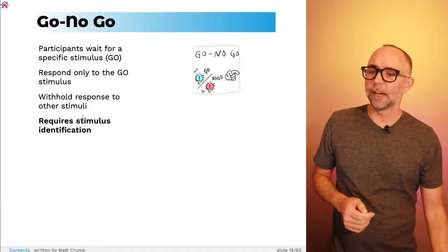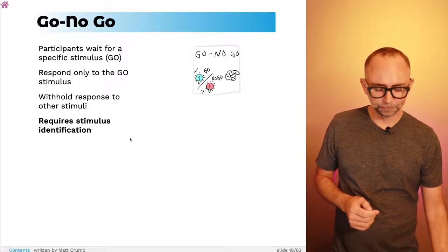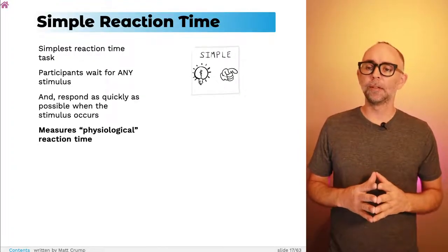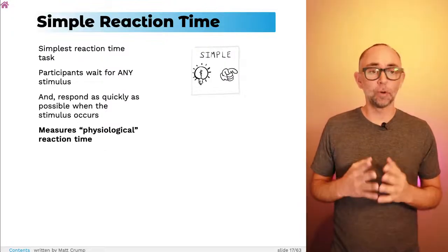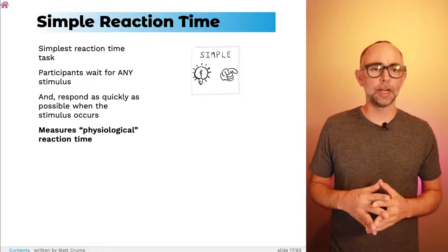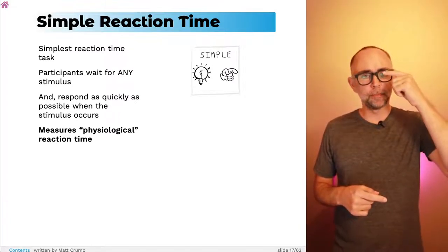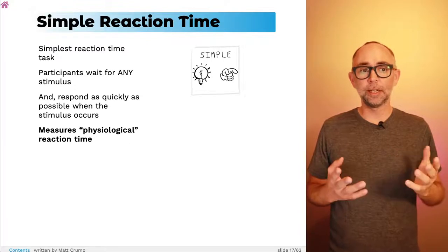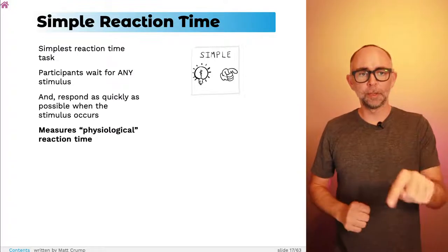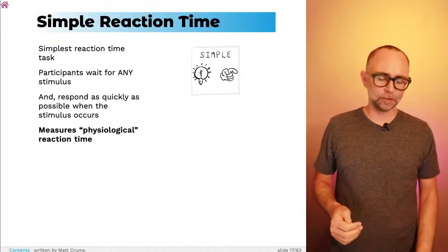Donders would say this task requires stimulus identification, whereas the simple reaction time task more simply reflects what he calls physiological reaction time — the minimum amount of time for a light to hit your eyeball and process through to making a response as quickly as possible. He calls that physiological time.